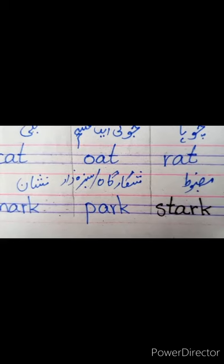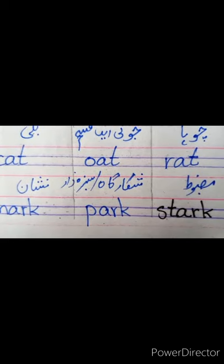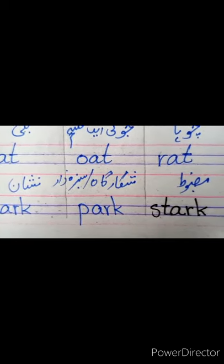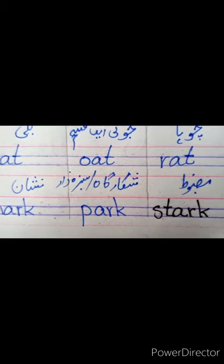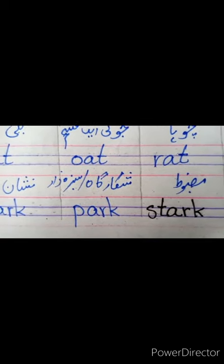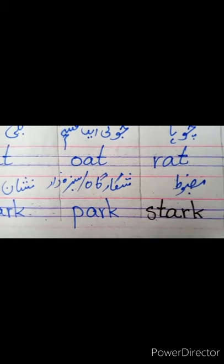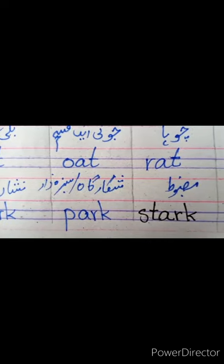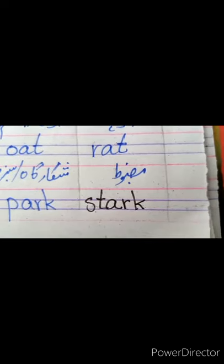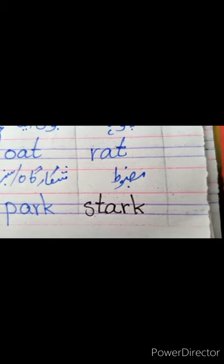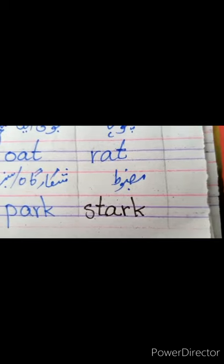Fourth one is 'park' — P, A, R, K. وہ جگہ جہاں آپ سیر کیلئے جاتے ہیں — اس کو شکارگاہ کو بھی park کہتے ہیں، یا سبزہ زار. پارک میں green plants وغیرہ ہوتی ہے. Fifth one is 'stark'. Stark means سخت یا مضبوط — تو یہ بھی A, R, K پہ end ہوتا ہے.